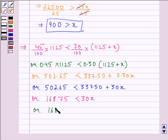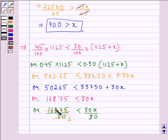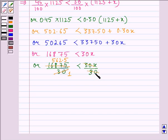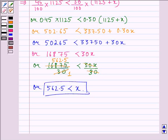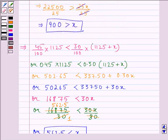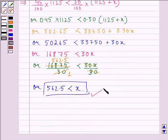Dividing both sides by 30: 16875 ÷ 30 < 30X ÷ 30, which gives 562.5 < X. So X is greater than 562.5. Combining the two inequalities — X < 900 and X > 562.5 — we get 562.5 < X < 900.